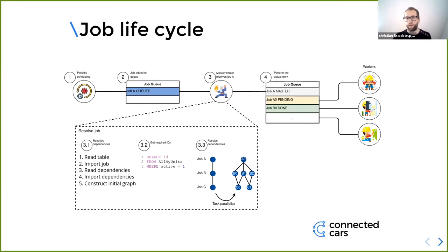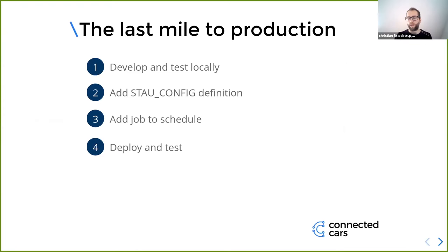The last mile to production is now simpler. We develop and test locally because everything is vanilla Python. You add in the stout config section defining dependencies, add the job to the scheduler if needed, and then test and deploy. As long as your environment matches, it normally works in production, which really speeds things up.